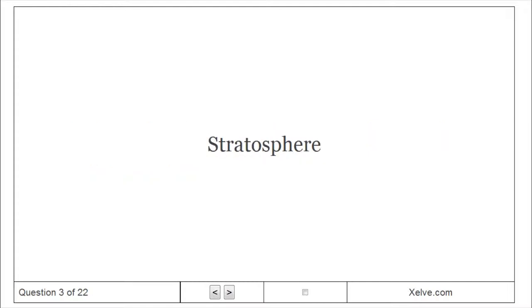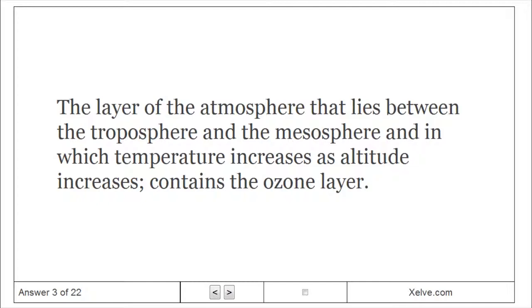Stratosphere: The layer of the atmosphere that lies between the troposphere and the mesosphere, and in which temperature increases as altitude increases. Contains the ozone layer.